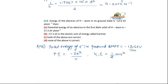Here, Z is the atomic number, equal to the number of protons in the nucleus. E is the charge on the electron, since we are talking about the potential energy of the electron. R is the radius of the orbit in which the electron is moving.